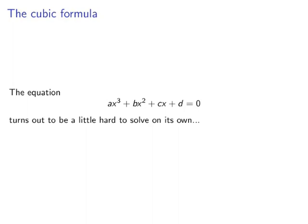But then along came the cubic formula, which was discovered in the mid-16th century. Now we would like to have a cubic formula for solving an equation like ax cubed plus bx squared plus cx plus d equals zero, but it turns out that's a little bit hard. So we simplify the types of cubics we look at down to x cubed plus px plus q equals zero.